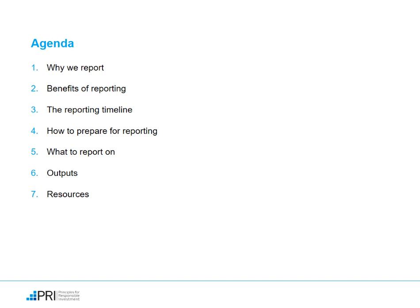First, we are going to go through the basics of reporting for PRI, such as why we report, the benefits, and the timeline for reporting. Then we will discuss how you can prepare for reporting and what information you will have to report on. We will provide an overview of where you should start the reporting process, including a couple of examples of the logic of the framework. Then we will explain what the report typically looks like and the meaning behind some symbols present throughout the framework. Then we can discuss the outputs you receive after the reporting cycle. Lastly, we will also direct you to relevant guidance, resources, and frequently asked questions that you will find useful during reporting.